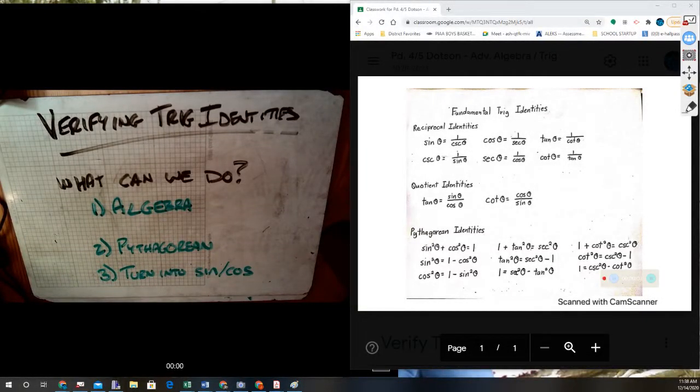Verifying trig identities. The biggest issue ends up coming up: what can I do as I'm looking at a problem?